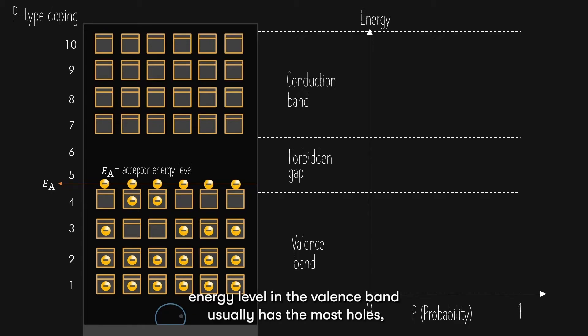The highest energy level in the valence band usually has the most holes, or the least electrons, and the number of holes gradually decreases as we move downwards the energy level, because the lower energy level electrons require more energy to hop into the acceptor energy level, which makes the chances of this happening lesser.